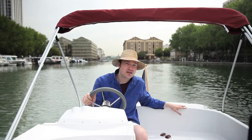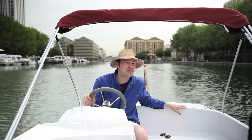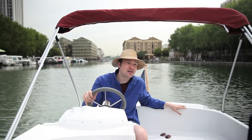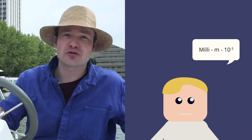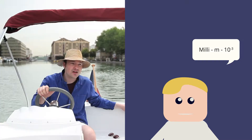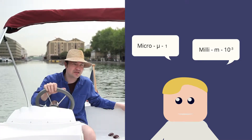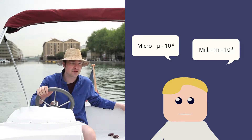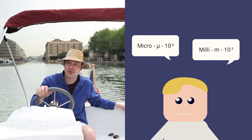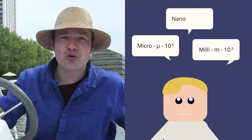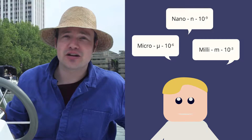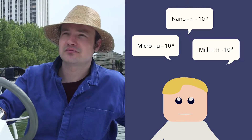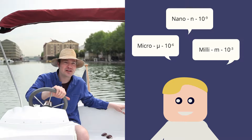Before we begin let's remember our metric prefixes. In biology there are three that we use all the time. Milli indicates division by one thousand, or ten to the third. Micro indicates division by one million, or ten to the sixth — that Greek letter is called mu, by the way. And nano indicates division by one billion, or ten to the ninth. Once you use these enough they'll start to become second nature.